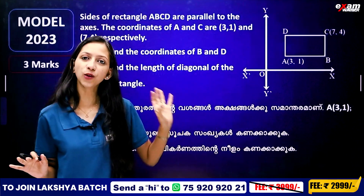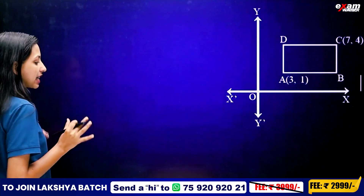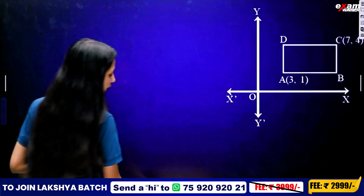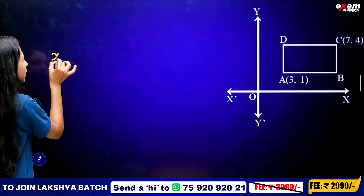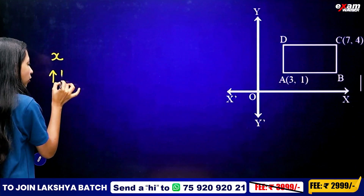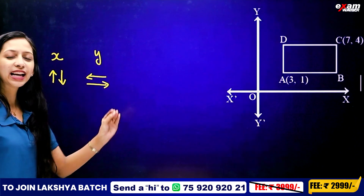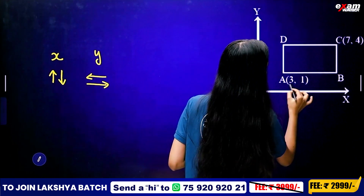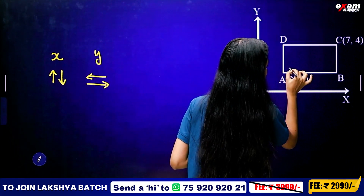We call this diagonal length as that of a rectangle. Now, how do we do this? Our rectangle is straightforward. We have coordinates: one point is (3, 1) and the other is (7, 4). We shift the x coordinate value of 3 and the y coordinate value.